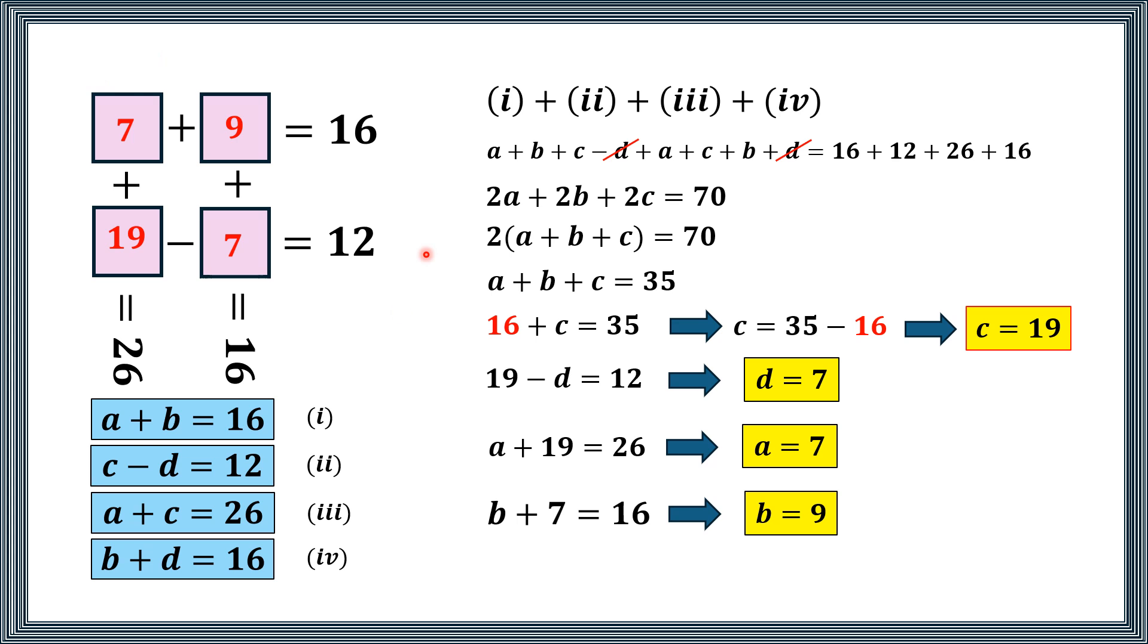And now all the values are found, and which are the answer of this puzzle. We have to substitute 7 over here, 9 over here, 19 over here, and 7 over here. So this is the answer of the puzzle. Thank you for watching.